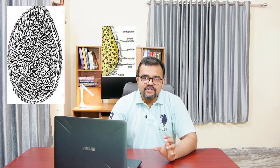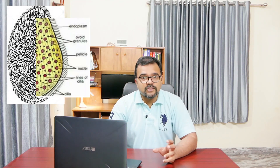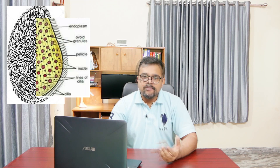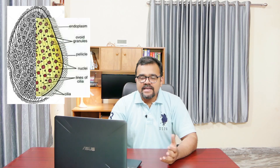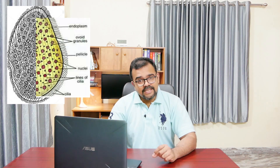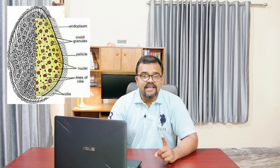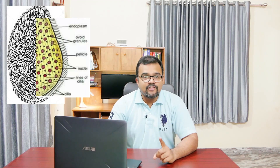They are multinucleated, the body is dorsoventrally flattened, and opalines are usually very large in size — they can grow up to three millimeters in length. The body of opalines is covered with cilia, and the infraceliature and alveoli are absent, unlike Ciliophora.